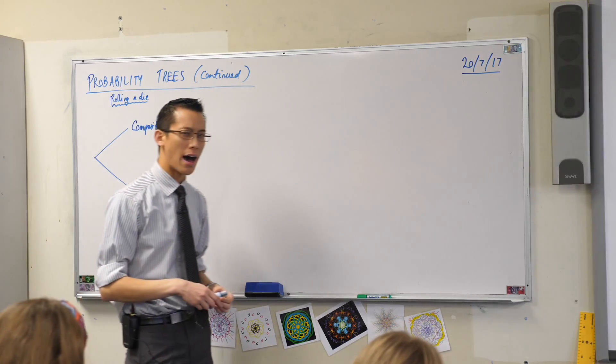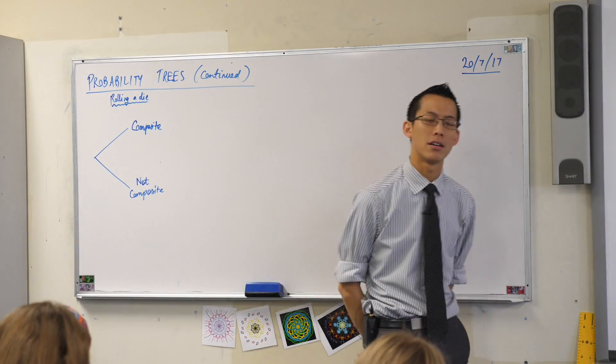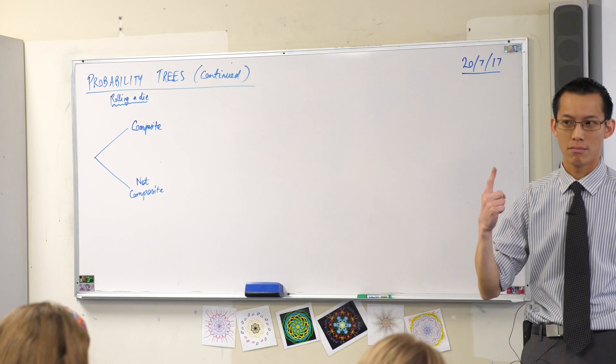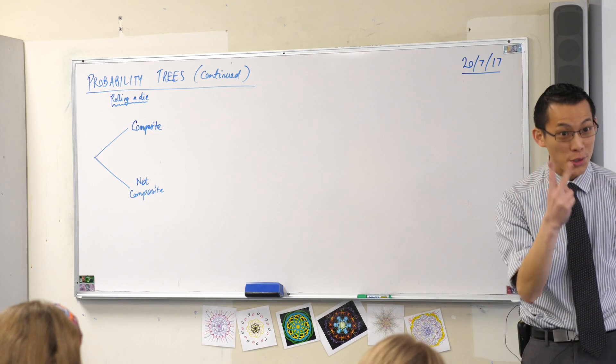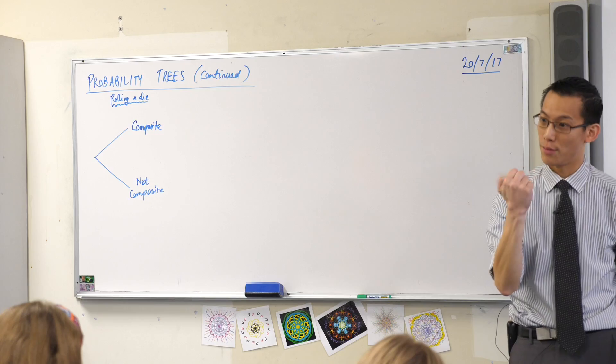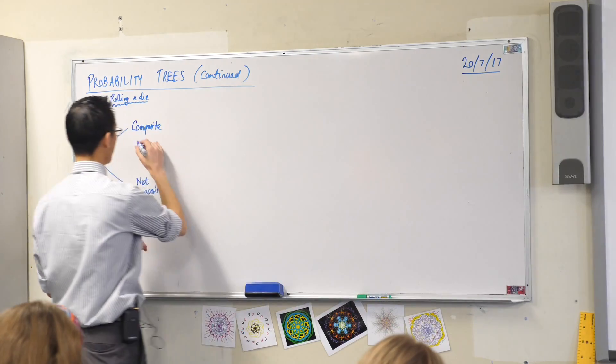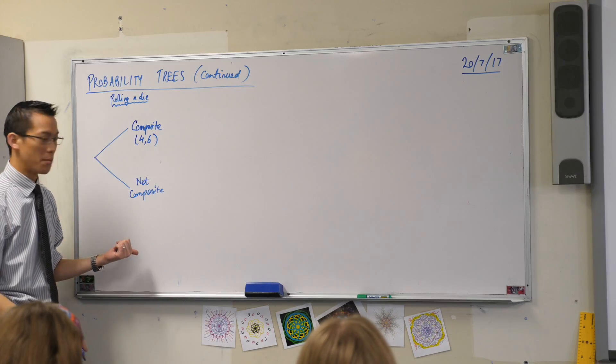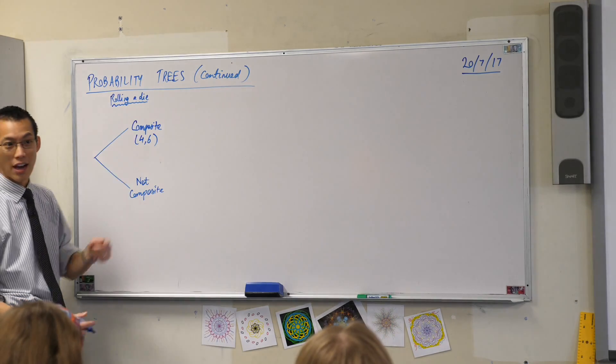So how many composite numbers are there on a die? Have a think about it. I've already told you one of them. There are two composite numbers. They are four and six. That makes all the other numbers, at least on a die, not composite.